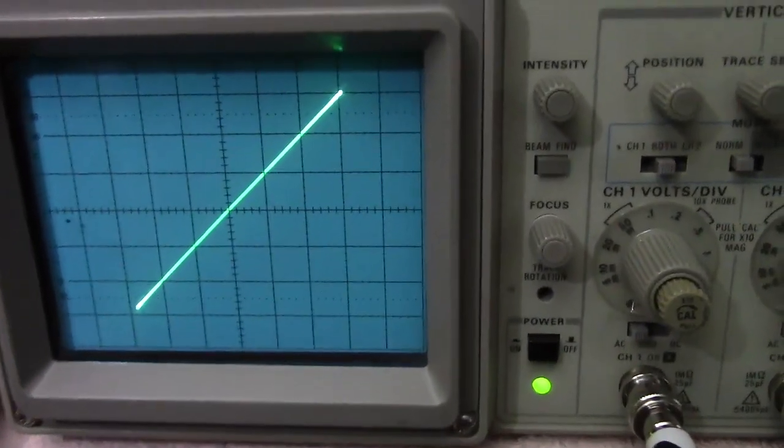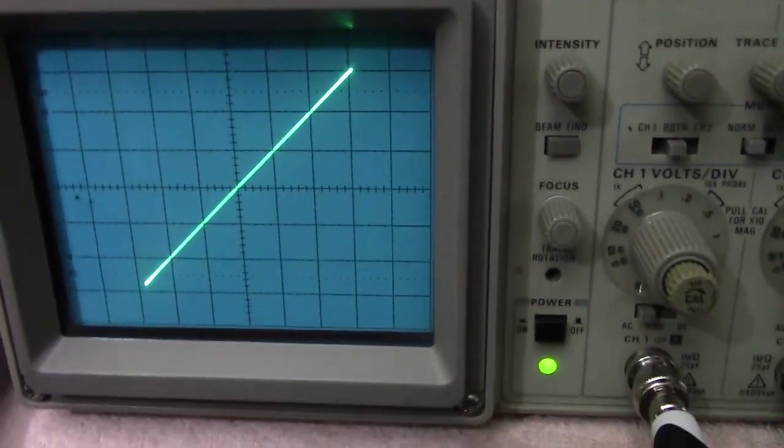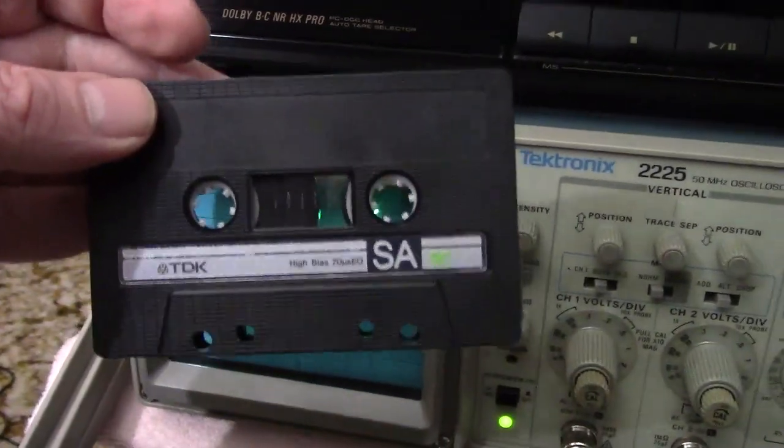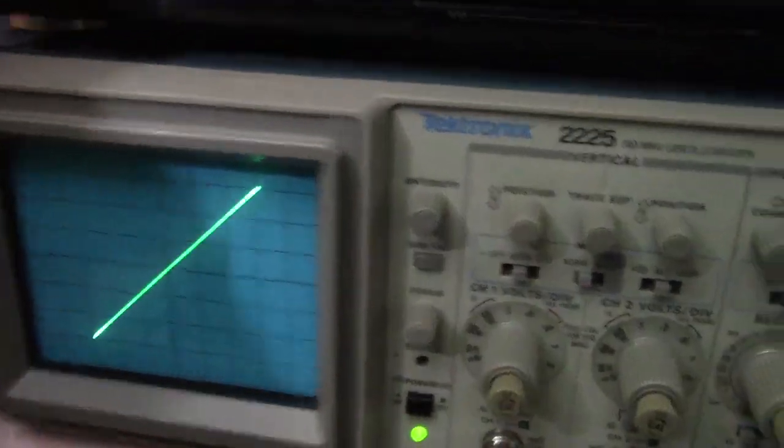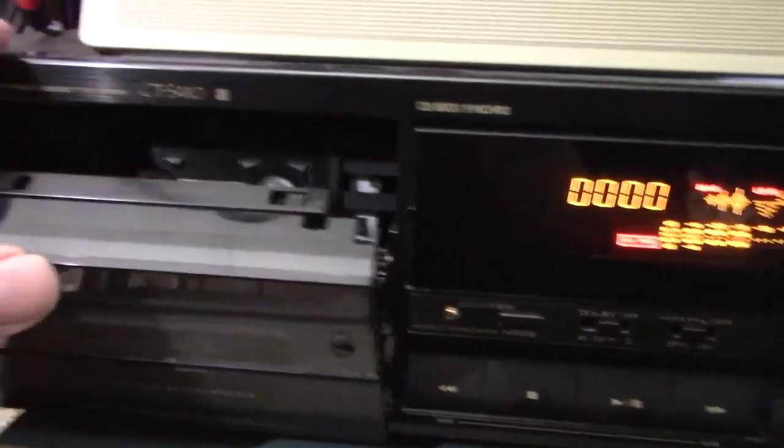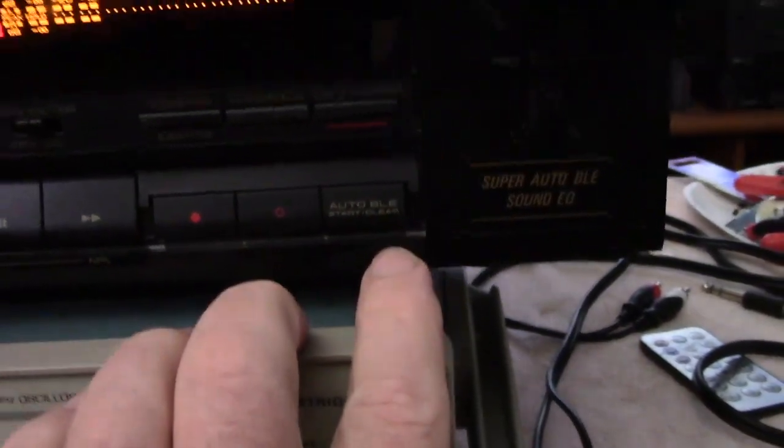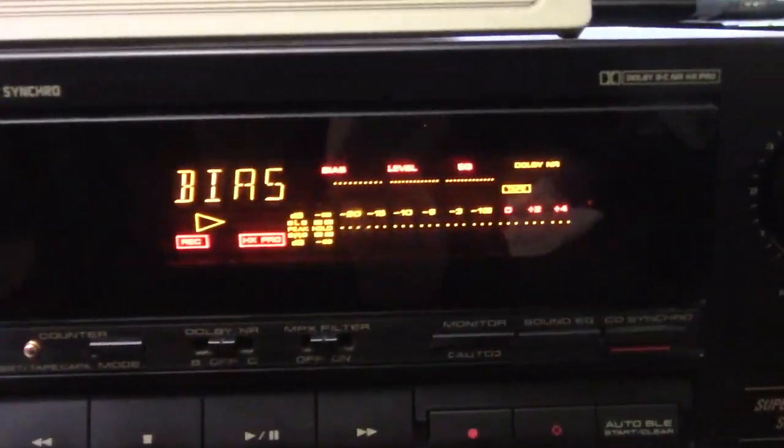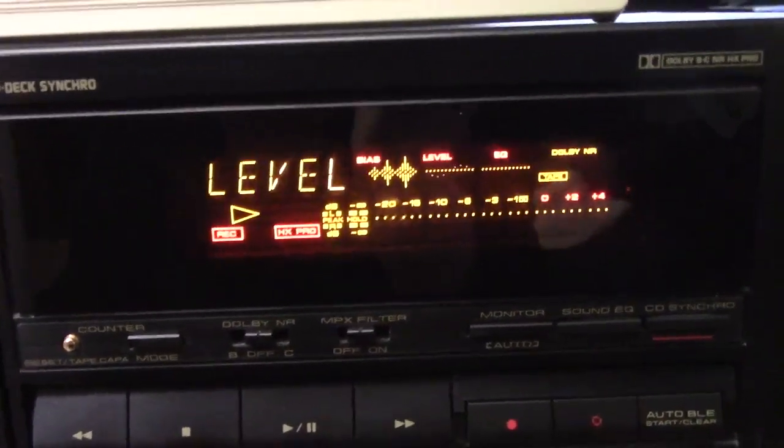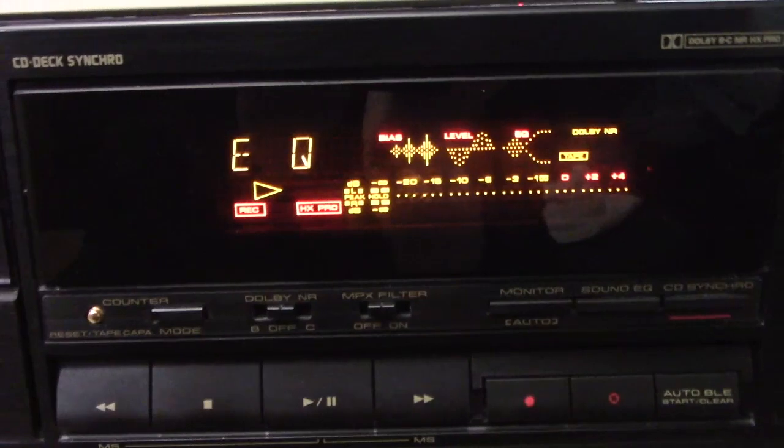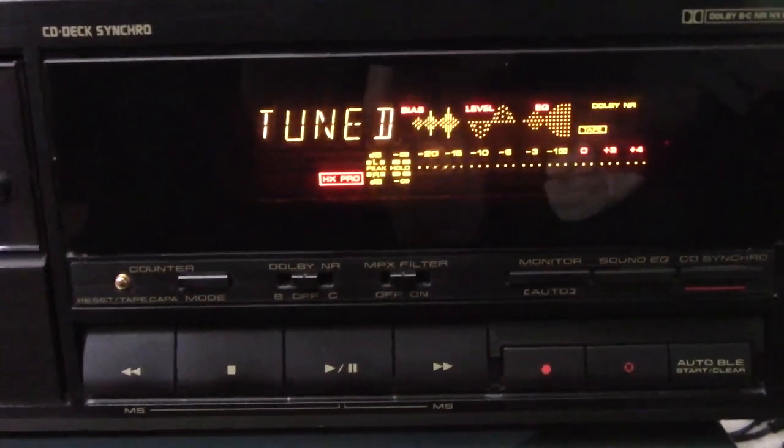It's perfectly in phase. You see the line is sideways, that means it's in phase. So what we're going to do is I'm going to take this old school TDK SA tape, I'm going to put it into the cassette deck and the cassette deck has a feature called Auto BLE. Auto BLE is this guy right here and I'm going to press it and we're going to watch the tape deck set itself. So it's going through the calibration mode now, the level and the bias and the EQ.